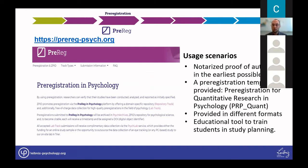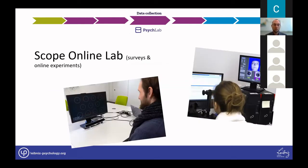Since preregistration is additional work, ZPID thought about how to incentivize creating these preregistrations and came up with two models to support data collection: the online lab and the offline lab. Studies in the online lab are conducted online—researchers implement their study with suitable software and ZPID buys samples from a panel provider for them, enabling quota samples, longitudinal, cross-sectional, and multi-country studies conveniently. If researchers register their study, they can get this service for free and apply at any time.